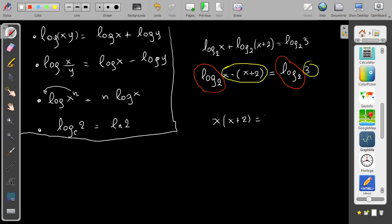So x² + 2x, I'll bring 3 from the other side, equals 0. And then if I use the discriminant, x is 1 or x equals minus 3. Now here I have two solutions.